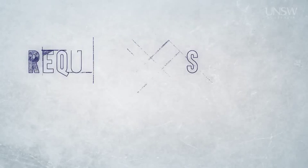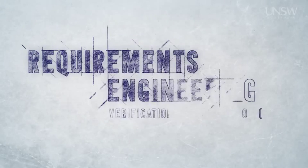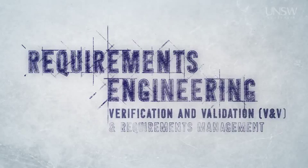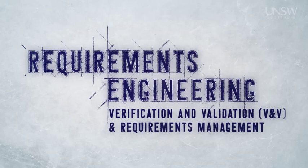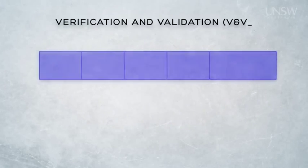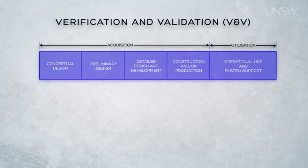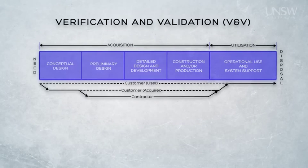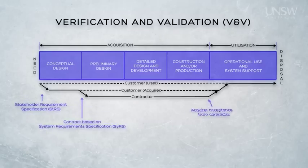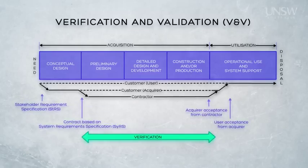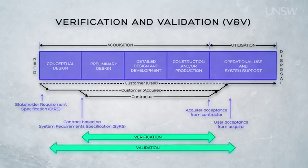The entire system engineering process aims to produce a system that is both verified against the documents that produced the system, and validated against the original needs that initiated the development. There are two principal acts: verification, which ensures that the system at any stage matches the specifications we have developed for it — that is, we have built the system right — and validation, which ensures that the system meets the original business needs and requirements, that is, have we built the right system.